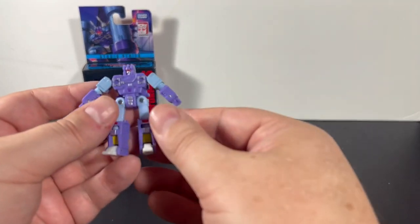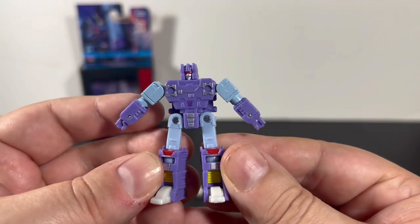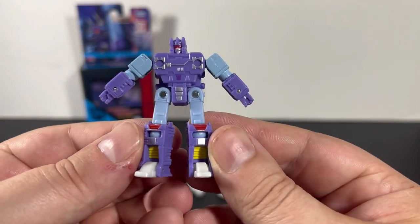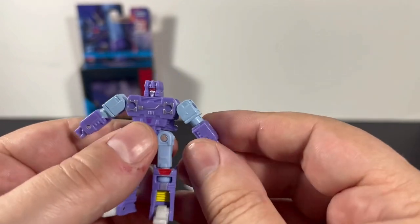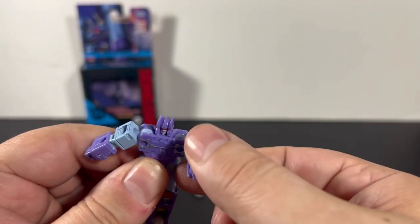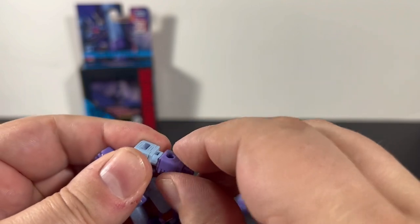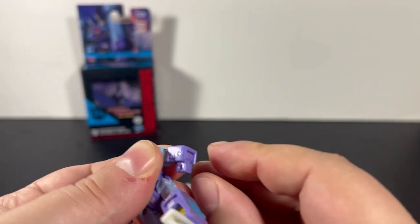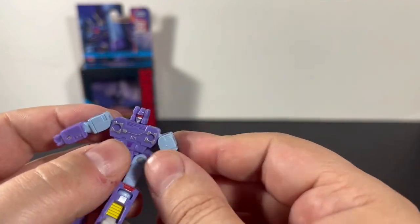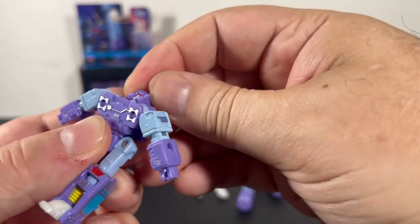And then we have him, Rumble himself, here as a robot. He looks pretty neat. And his hands, they do not pivot, but these do go in.